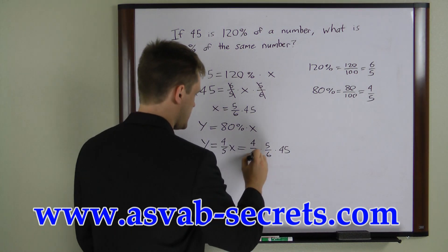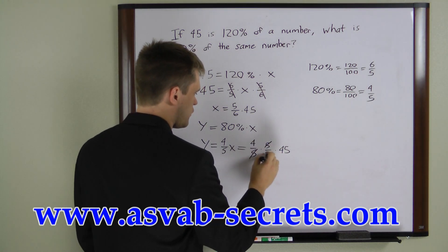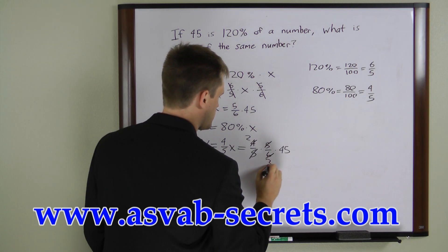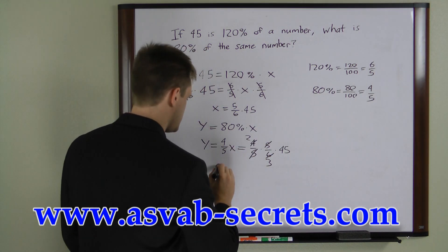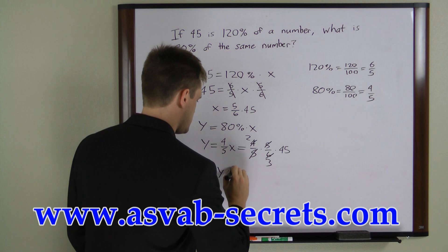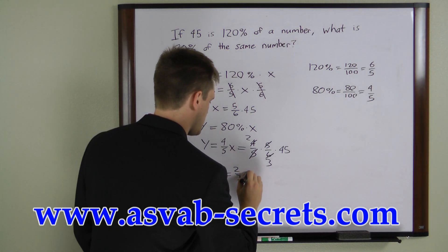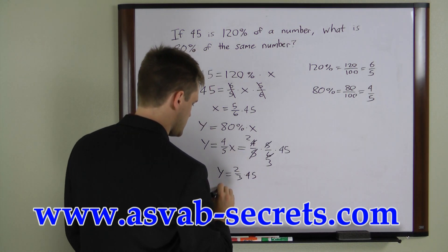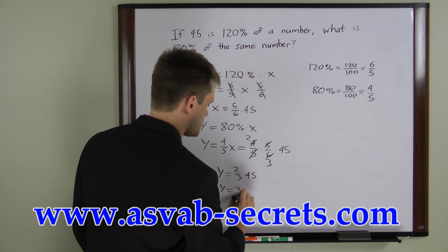Now we can cancel out these 5's, and 4 over 6 is the same as 2 over 3. So we can rewrite this as y equals 2 thirds times 45, which equals 30.